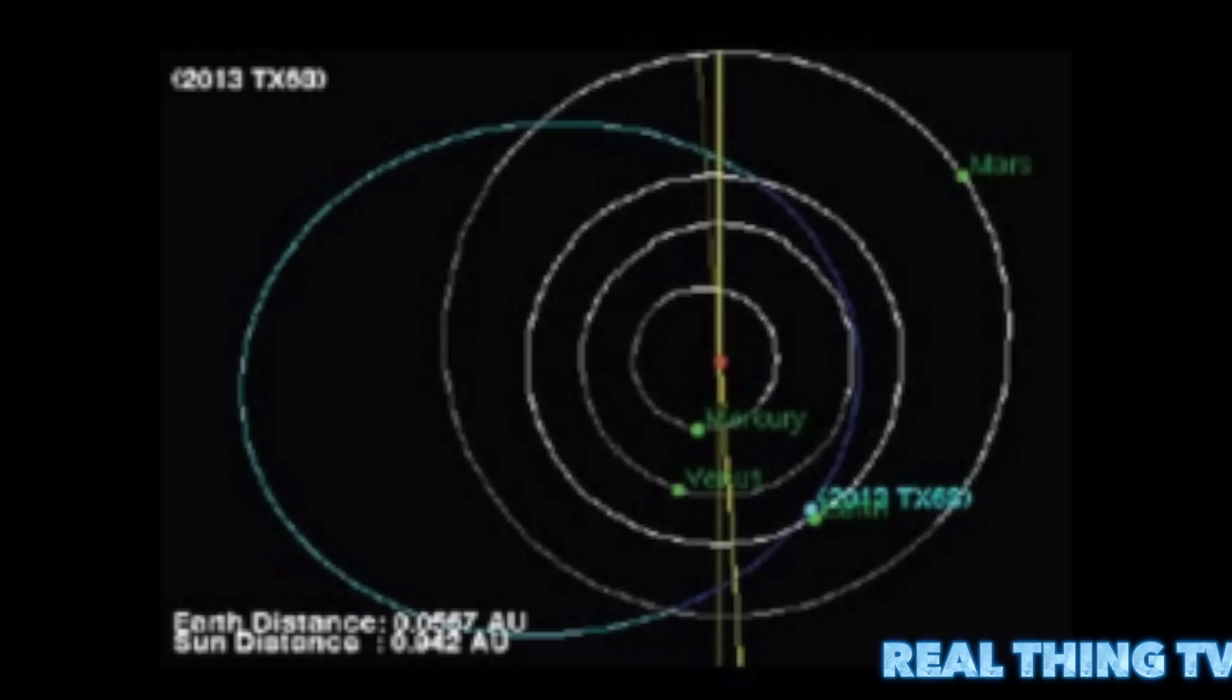But NASA admits this estimate may be widely inaccurate, and the asteroid may also pass Earth as far out as 9 million miles. In both scenarios, the space agency says the asteroid, dubbed 2013 TX68, poses no threat to Earth.